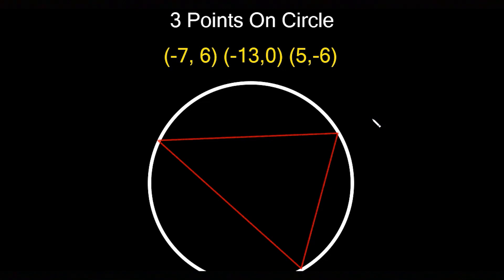In this video we're going to be talking about how to find the equation of a circle if we're given three points that are on that circle. The first thing you have to understand is the relationship between these three points — in particular it has to do with the perpendicular bisector.